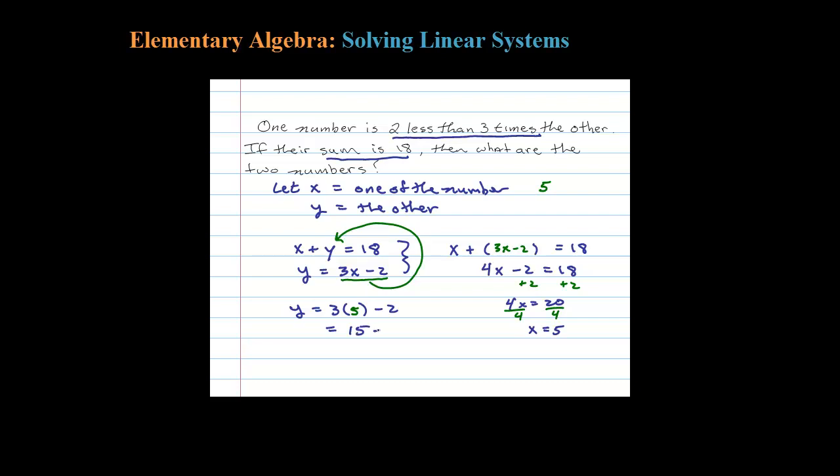We have 15 - 2, which is 13. So the other number is 13. The two numbers are 5 and 13, and sure enough their sum is 18. Don't just guess and check at these—you want to set this up using algebra because certainly the numbers could be a little bit more difficult to guess at.